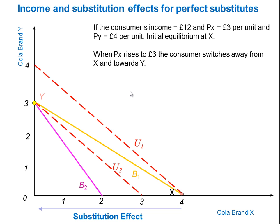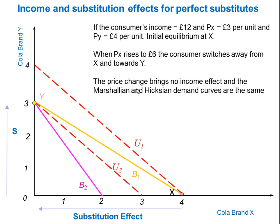There's effectively what's called a substitution effect — the response that emanates from a price change. As the price changes, this particular consumer switches entirely away from brand X and towards brand Y. Instead of consuming four units of brand X as originally, because of the doubling of price of X, they now switch entirely to brand Y. They're consuming three units of brand Y at point Y, having substituted away from brand X, which is now much higher in price, whereas brand Y is relatively lower in price.